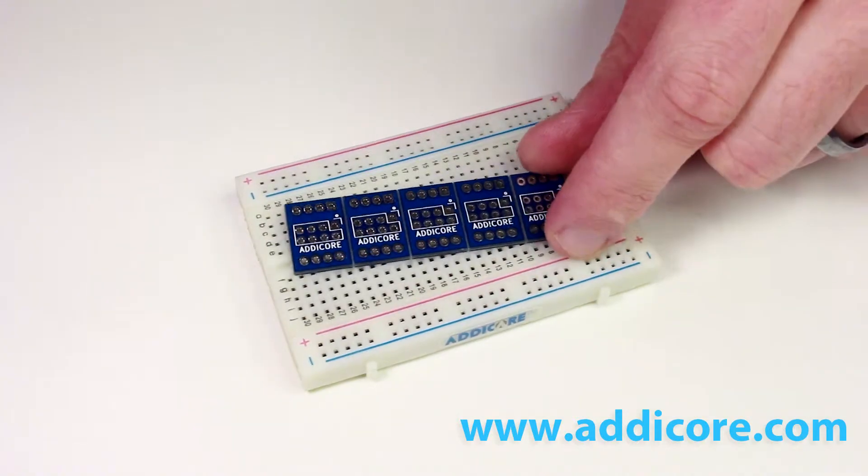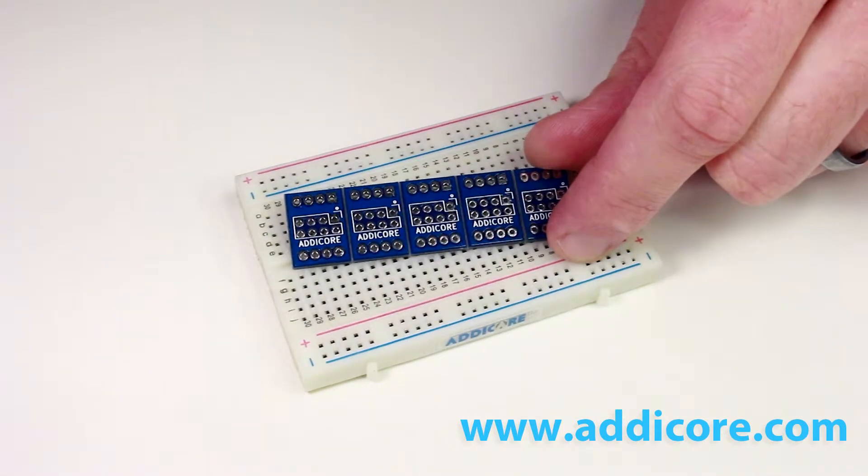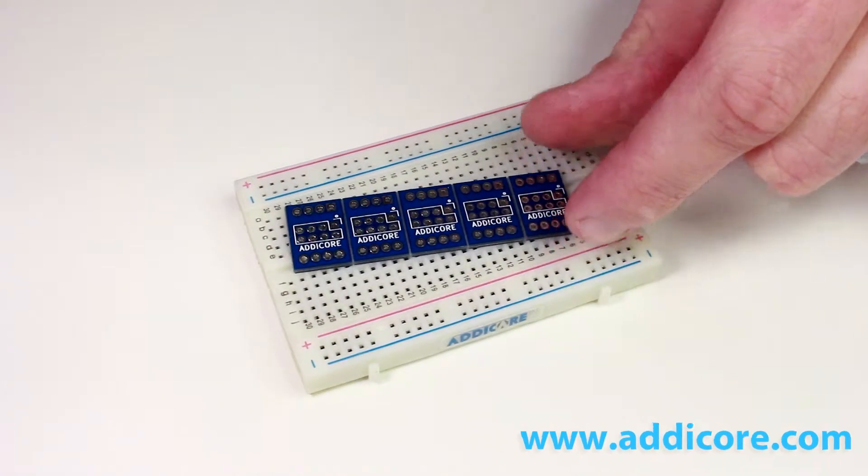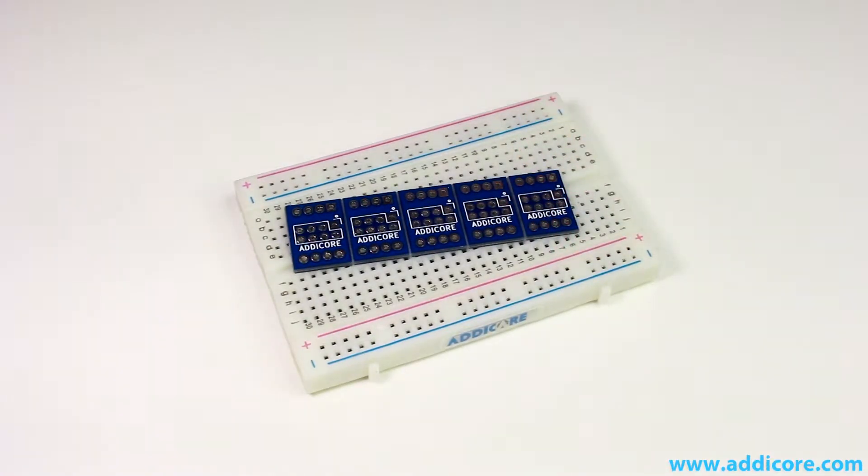Craig with Addicore here. Today I'll show you how to assemble this adapter board used to break out any 2x4 header to standard breadboard footprint.